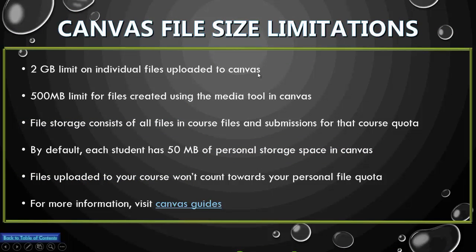A large barrier to doing media assignments can be space issues, especially with video files. You cannot upload a file larger than 2 gigabytes in size. Now that's a humongous file, but if you wind up with a file bigger than that, you will not be able to upload it. If you're using the built-in Canvas media tool for your submission, your file will be limited to 500 megabytes — if it's any bigger than that, it's not going to work.